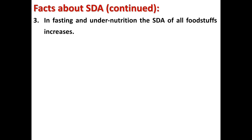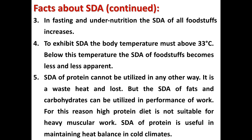Proteins fail to exert specific dynamic action after removal of the liver, but the liver is not the site for carbohydrate and fat SDA, as removal of the liver does not affect them. In fasting and under-nutrition, SDA of all food stuffs increases. To exhibit SDA, the body temperature must be above 33 degrees centigrade; below this temperature, heat liberated from food becomes less apparent and SDA decreases. The SDA of protein cannot be utilized in any other way — it is waste heat that is lost. But the SDA of fat and carbohydrate can be utilized in performance of work, so high protein diet is not suitable for heavy muscular work. SDA of protein is useful in maintaining heat balance in cold climate.